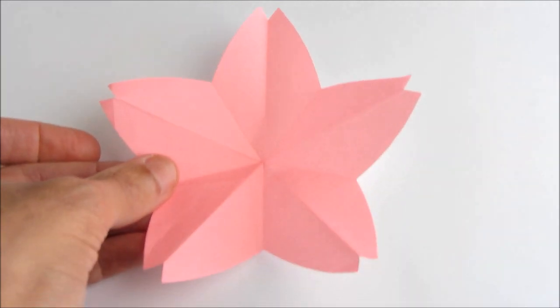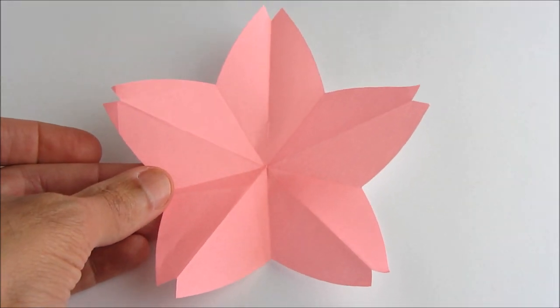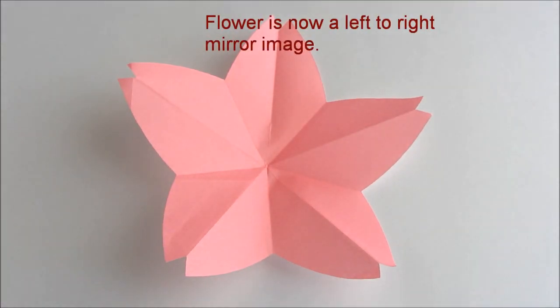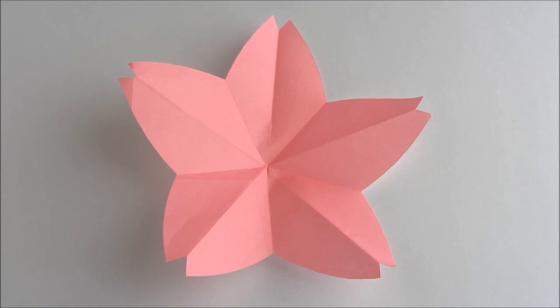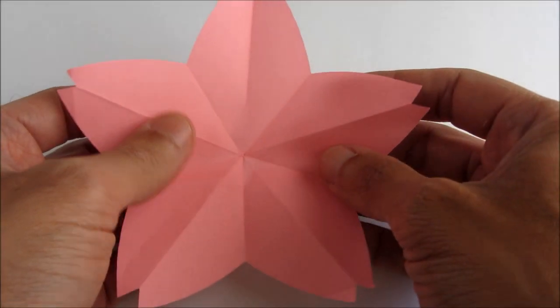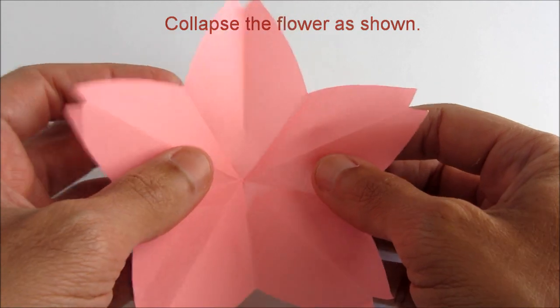So now the right and left halves are mirror images of each other. So once you've done that, now you can collapse the paper like we're showing here.